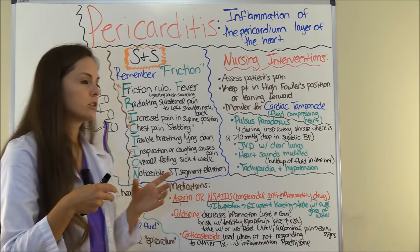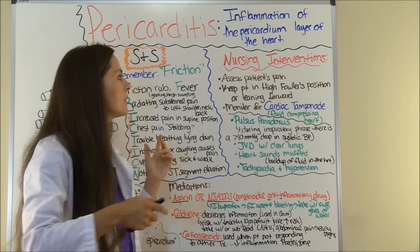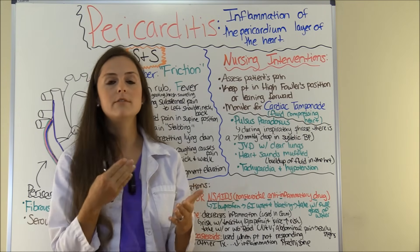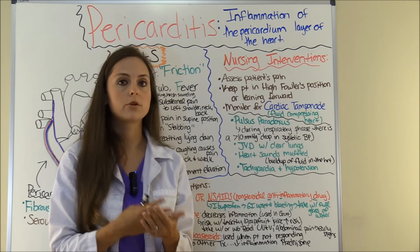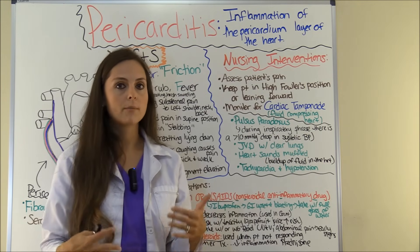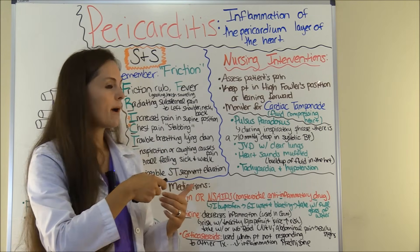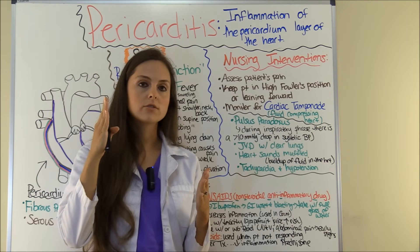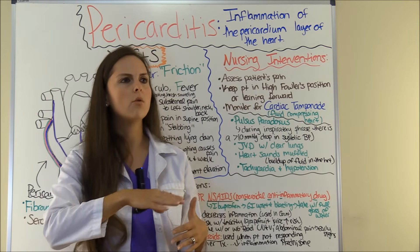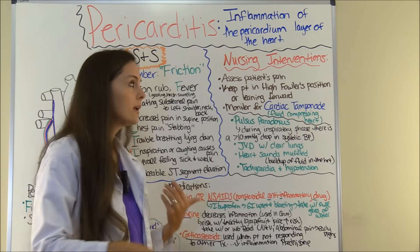Now let's look at the nursing interventions — what we're going to do for this patient to make them more comfortable. First, as a nurse, we want to assess their pain, since this can be very painful, and utilize whatever the physician has ordered for pain management, which we'll go over in a moment. We also want to teach the patient to sit in the high Fowler's position or lean forward, because that helps relieve pain, and to avoid lying in the supine position, which increases pain.